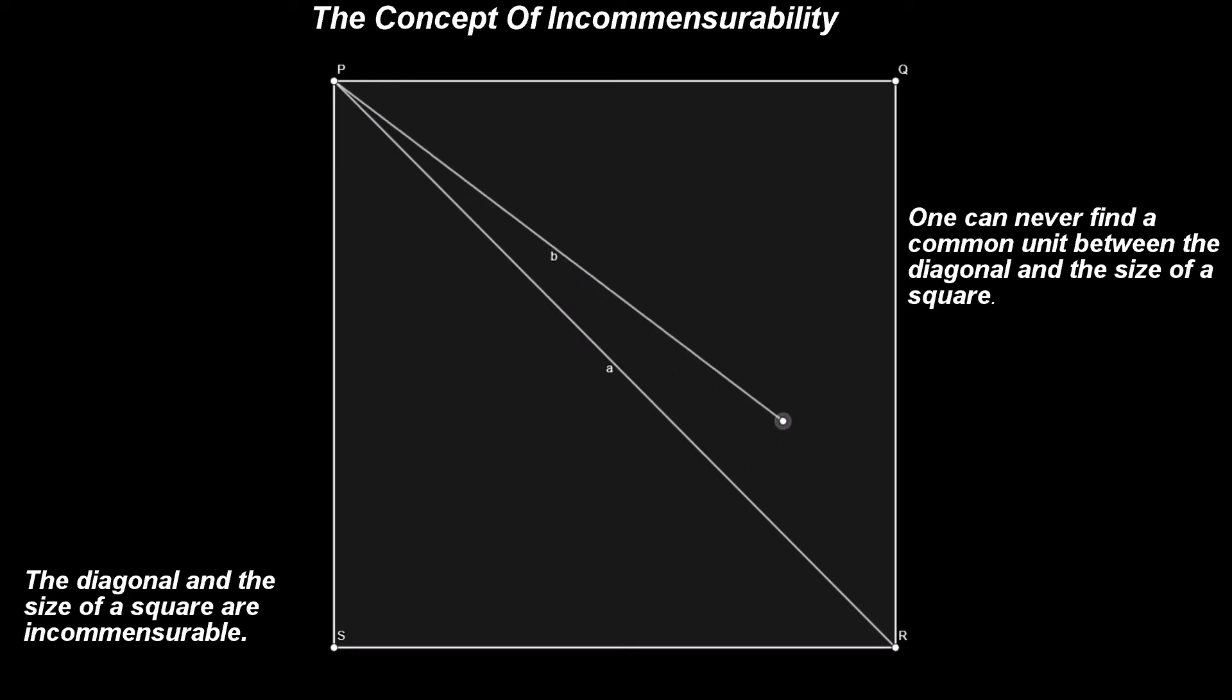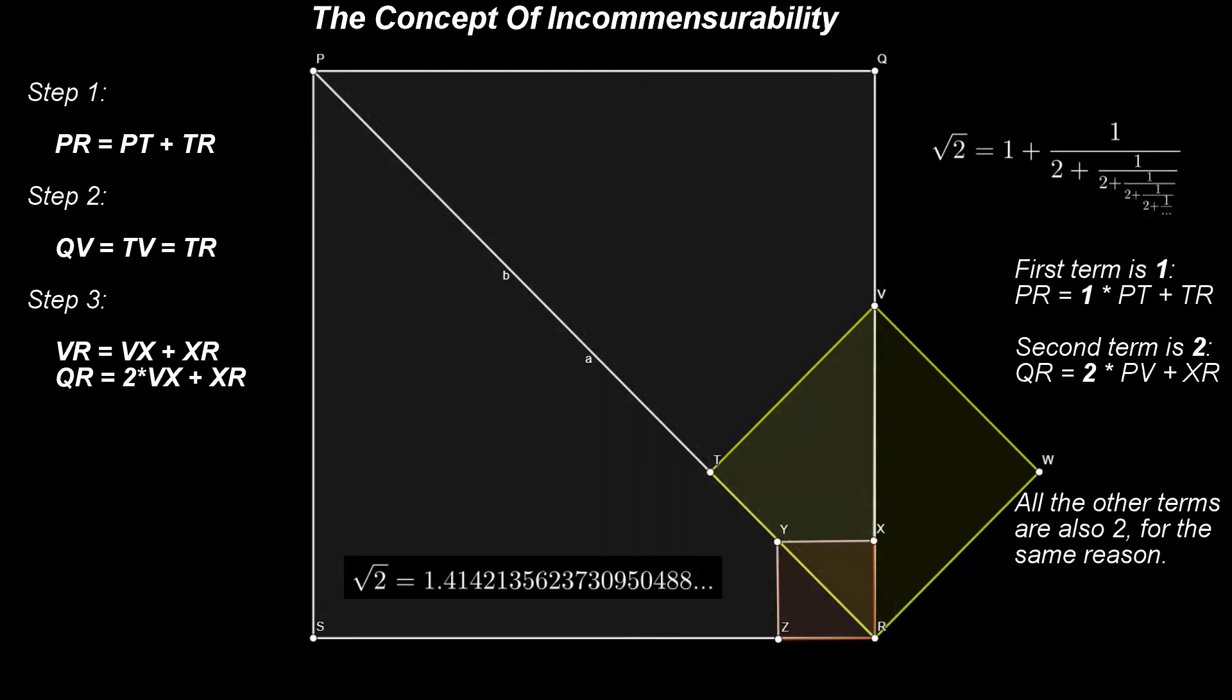This geometrical statement is equivalent to the following arithmetical statement. The number 1 and the number square root of 2 are two incommensurable magnitudes. This fact can also be stated in the following way. There is no way to express the number square root of 2 as a ratio between two integer numbers.